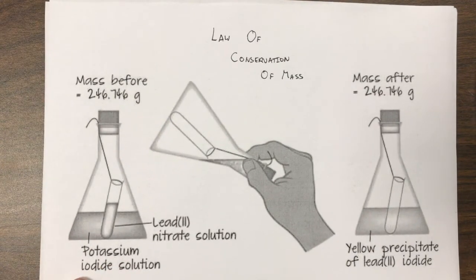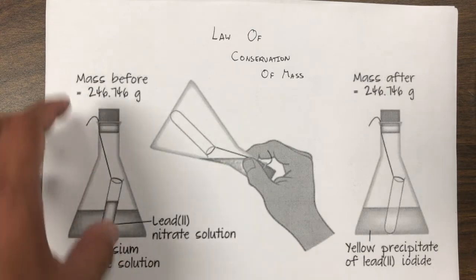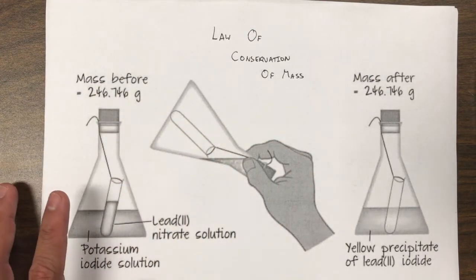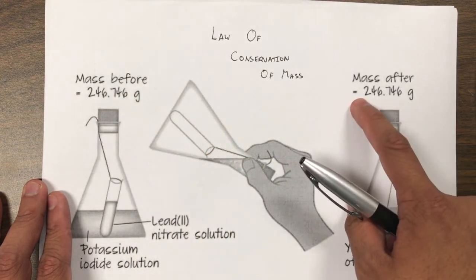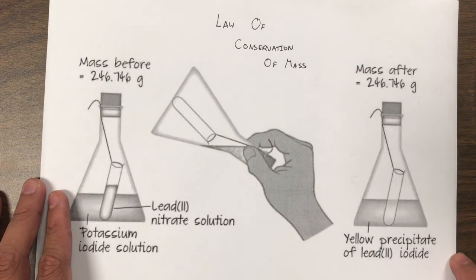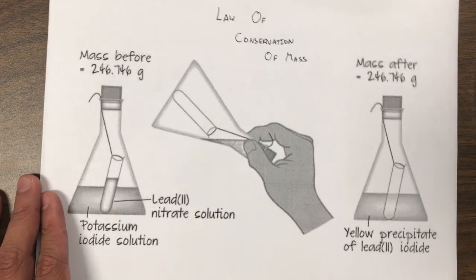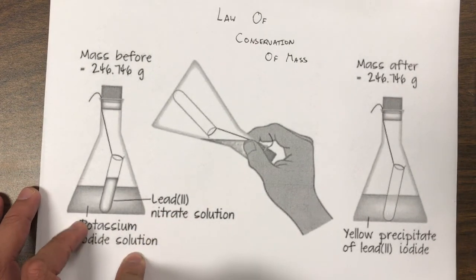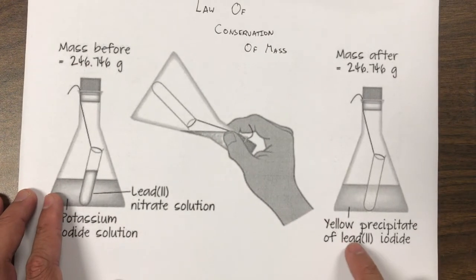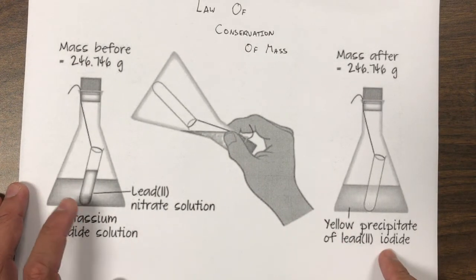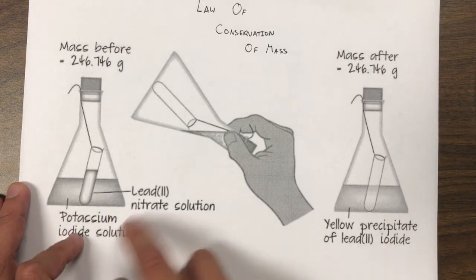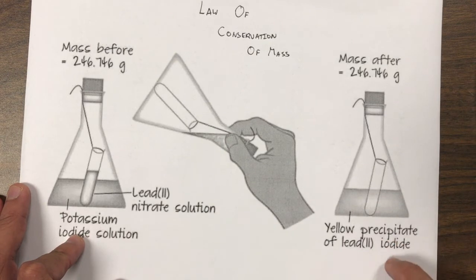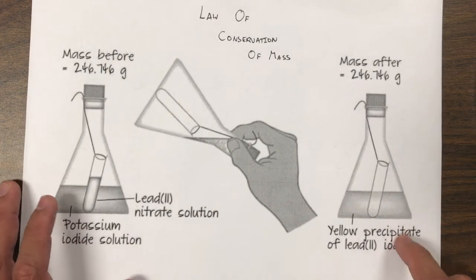Another thing we're going to go over is the law of conservation of mass. This states that mass can neither be created or destroyed. So the mass before the reaction has to equal the mass after the reaction. We can see that we have lead nitrate and potassium iodide before, and then we have lead iodide. We'll have lead iodide and potassium nitrate at the end. Potassium iodide and lead nitrate, and then we'll have lead iodide and potassium nitrate in the solution after this double displacement.